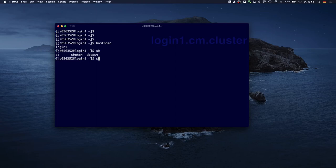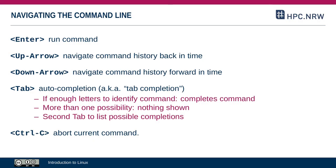If there are too many options — for example, if I were to type only 's' and then press tab twice — it would show me how many possibilities there are, and optionally I can display all 250 of them or decline. Finally, there's the key combination ctrl-c, which aborts whichever command is currently running, for example if it's stuck.